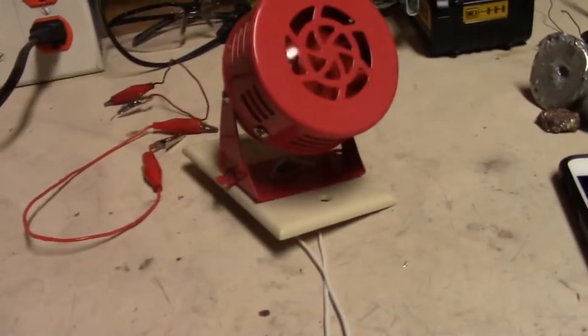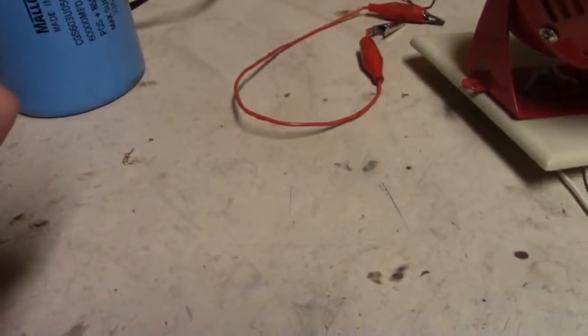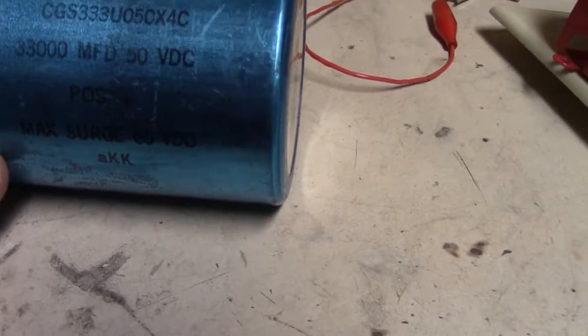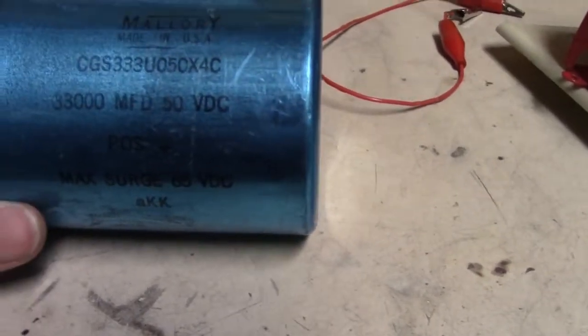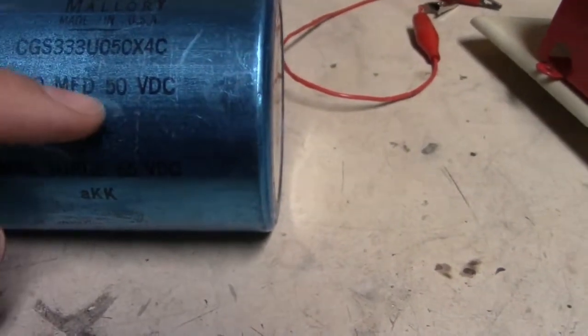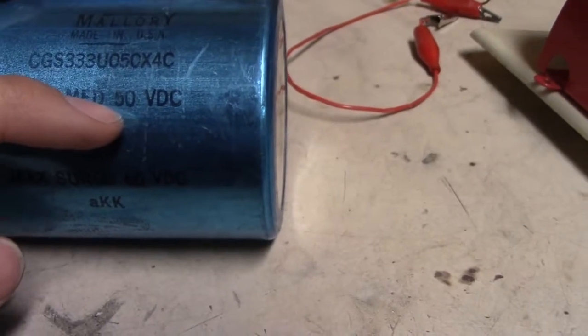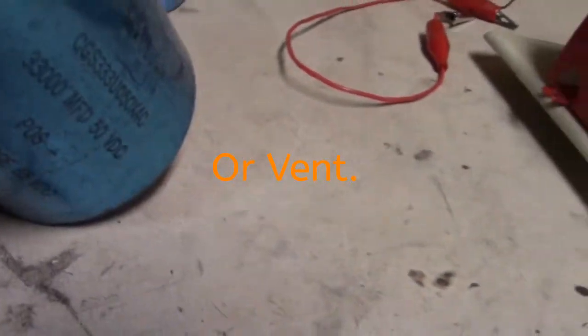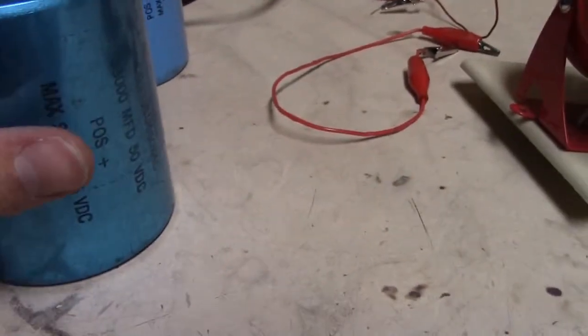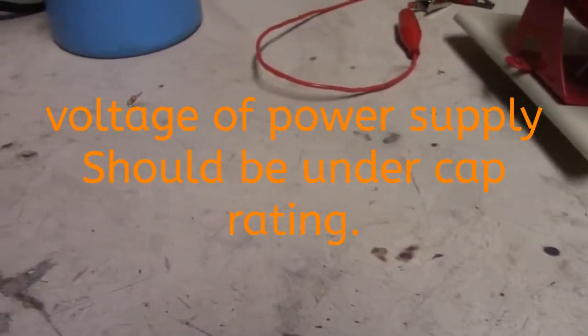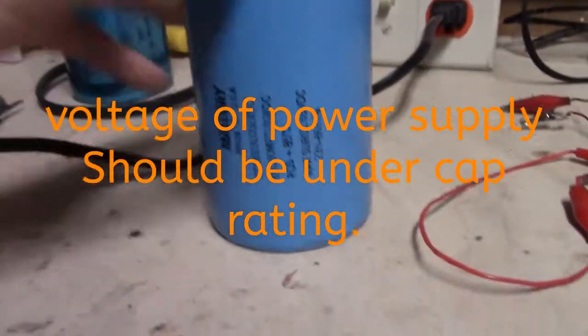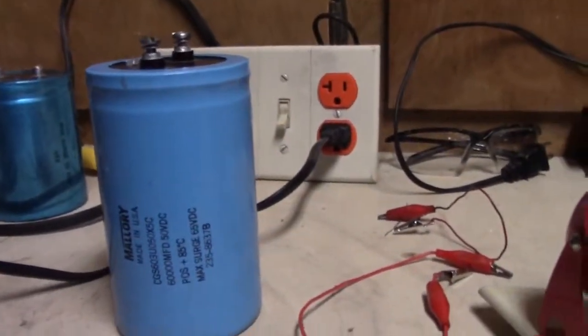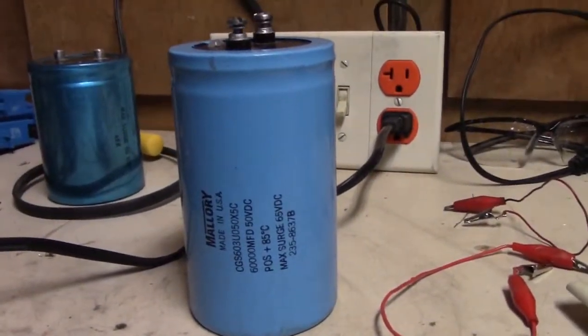Yeah, this is a huge capacitor. You're going to need one of these. Now there are smaller ones as well depending on your siren. This one here is a 33,000 microfarad capacitor also at 50 volts DC. Just make sure you do not exceed this voltage rating right here, otherwise your capacitor may potentially blow up and you don't really want that.